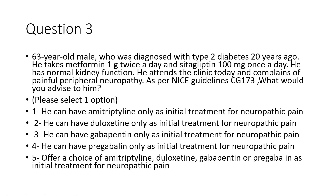Question three: a 63-year-old male diagnosed with type 2 diabetes 20 years ago, taking metformin 1g twice daily and sitagliptin 100mg once daily, with normal kidney function, presents with painful peripheral neuropathy. As per NICE guideline CG-173, what treatment do you advise? Options: amitriptyline alone, duloxetine alone, gabapentin alone, pregabalin alone, or offer a choice between amitriptyline, duloxetine, gabapentin, or pregabalin as initial treatment.